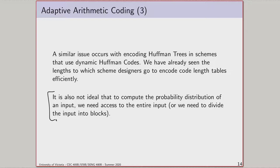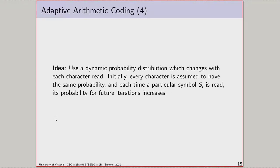Any model where every symbol has a non-zero probability and the decompressor can keep up with changes is a valid scheme. Here's a basic example: I use a dynamic probability distribution where every time I read a new character, I modify my distribution to reflect the apparent frequency of that character. Both compressor and decompressor start with no knowledge, assuming every character has equal probability. As each character is read, we increment its probability, and over the course of the input we slowly approach the true distribution.